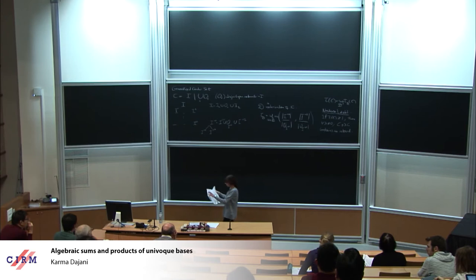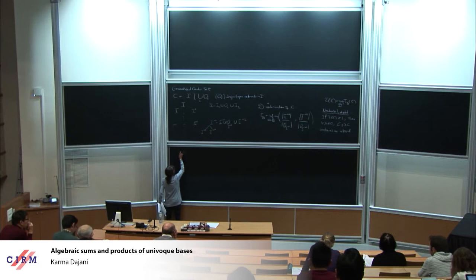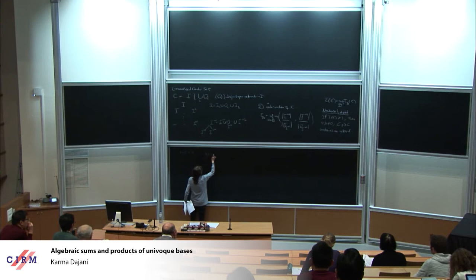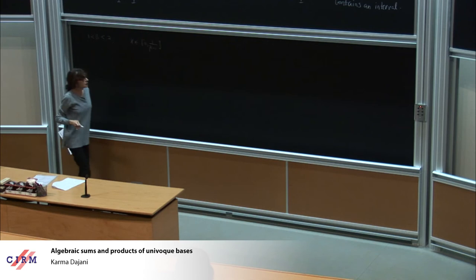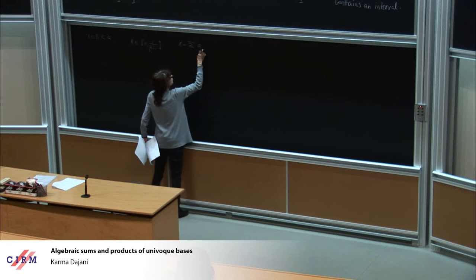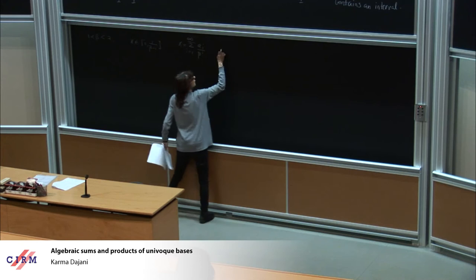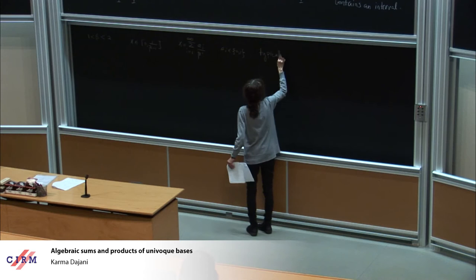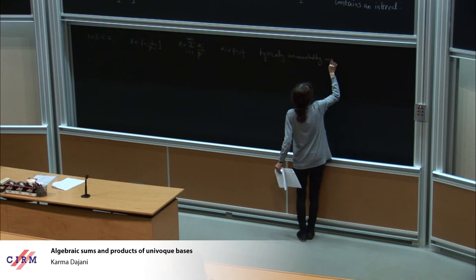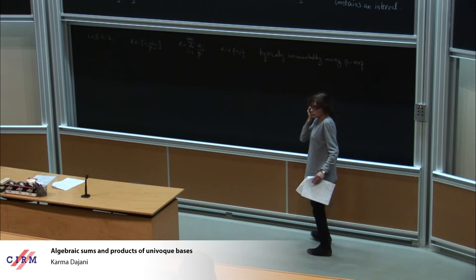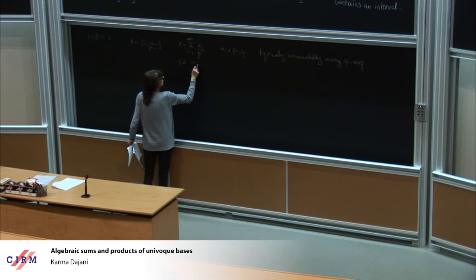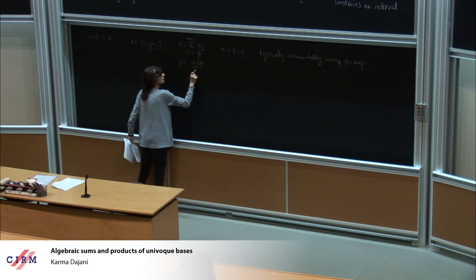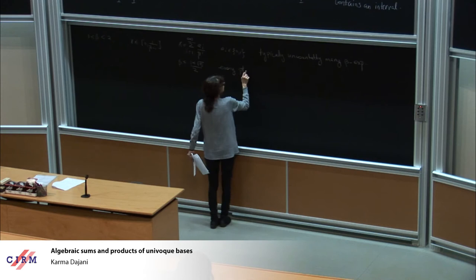Let me now come to the sets that I'm interested in. I'm going to look at β between 1 and 2. We know that every x in the interval [0, 1/(β−1)] can be written as an infinite sum of the form Σ a_i / β^i, with a_i in {0,1}. When β is not an integer, we have typically uncountably many representations of this form, which I call beta expansions. Before the golden mean — if β ≤ the golden mean — every point except possibly one has uncountably many expansions.